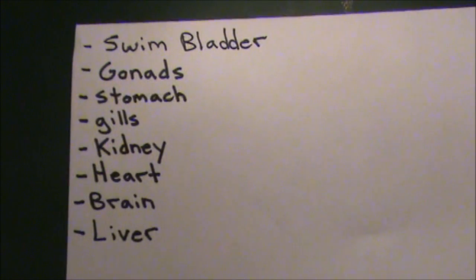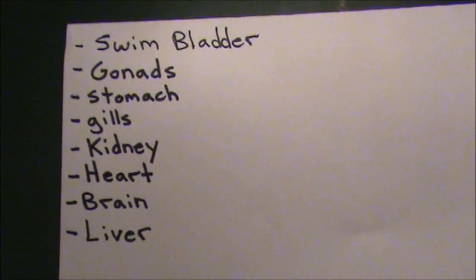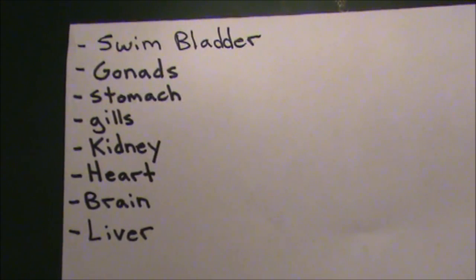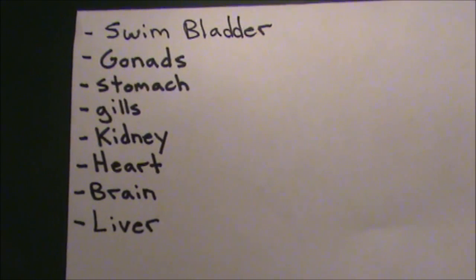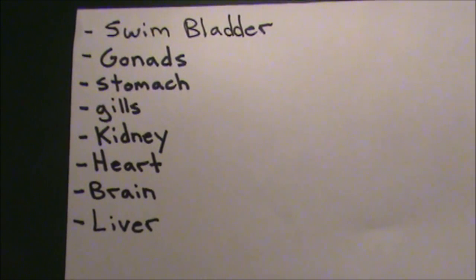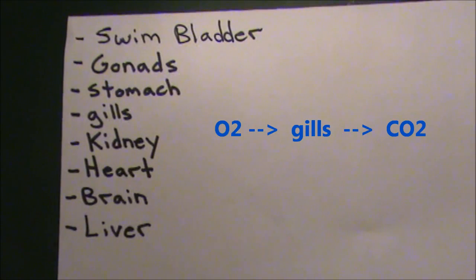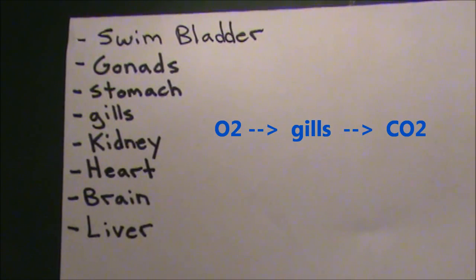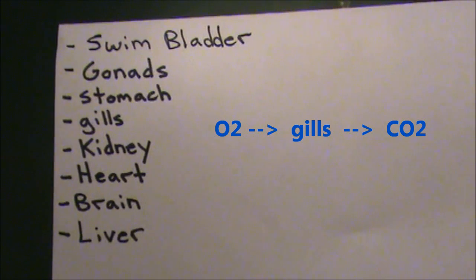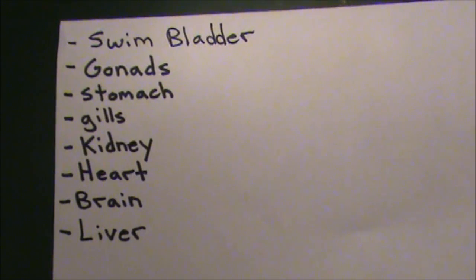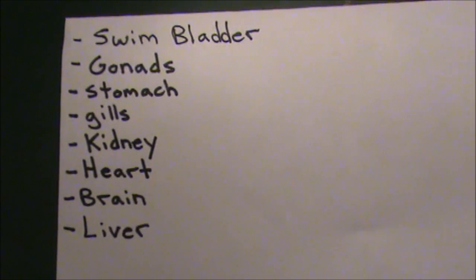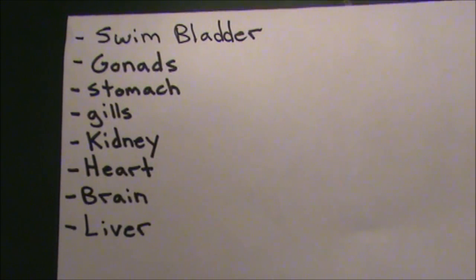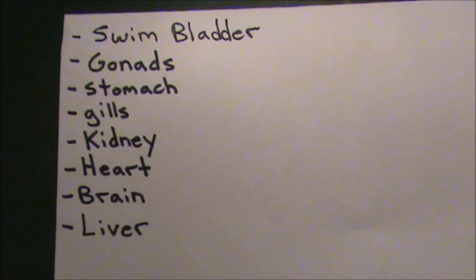Next we have the gonads, or the sex cells, which they use to reproduce. And under that we have the stomach, which they use to store food and digest it. Under that we have the gills — when they open their mouth to take in water, the water passes through their gills, oxygen is absorbed into the gills, and CO2 is released out. That exchange of gases is what allows them to breathe in the water.